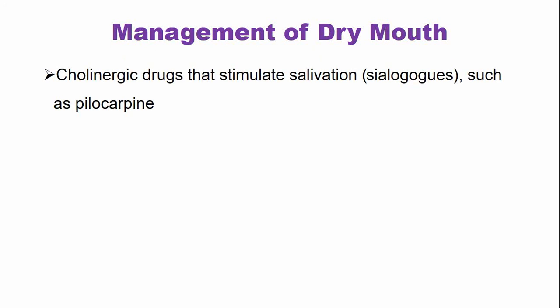Cholinergic drugs stimulate salivation, and these drugs are also known as sialogogues. One such drug is pilocarpine. However, these drugs are only effective when the salivary gland cells and connective tissue are intact. For example, if the salivary gland is absent at birth due to aplasia, or if the salivary gland tissues are damaged because of radiation therapy, pilocarpine will not be effective in these cases.